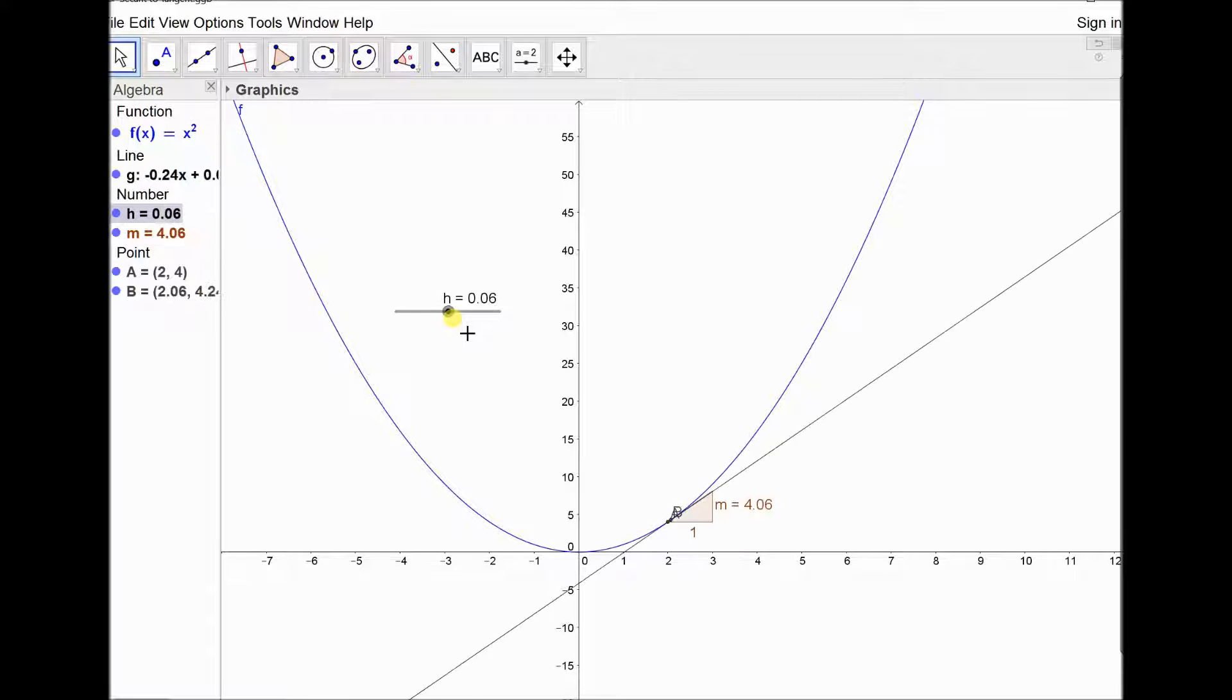So this is looking at a secant, checking out the average rate of change, whereas exactly at that point 2, that would be an instantaneous rate of change. So my secant is approaching a tangent as this value h goes towards 0.